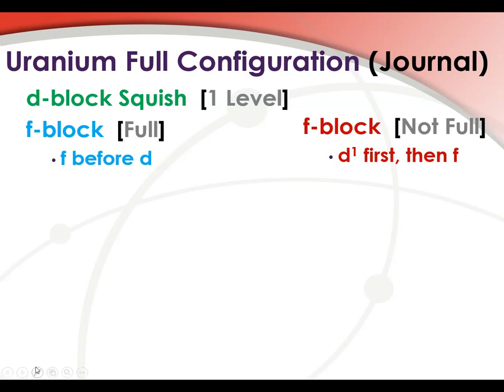Uranium has all the problems you could want in a question. It has the D-block squish, meaning those D-blocks are going to be a level lower. It has the F-block, both with a full F-block, so F before D, and F-block where it's not full. So uranium really has everything to it.